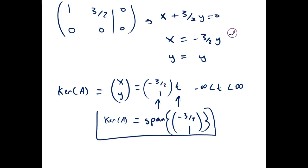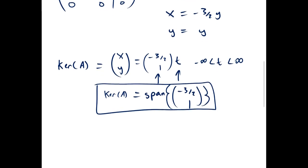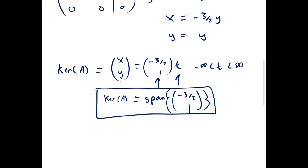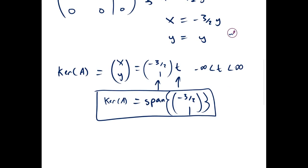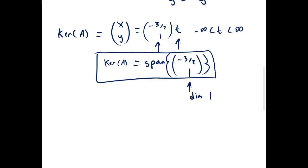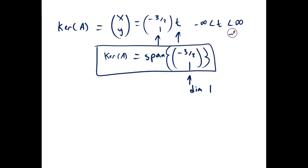So there's our kernel. The kernel of A equals the span of the vector negative 3 halves, 1, because it's all scalar multiples of that vector. It has dimension 1. If we wanted a basis for our kernel, beta sub k, that basis would just be the vector negative 3 halves, 1.